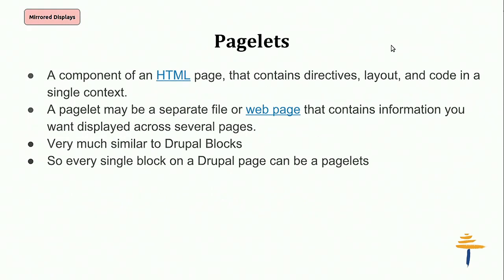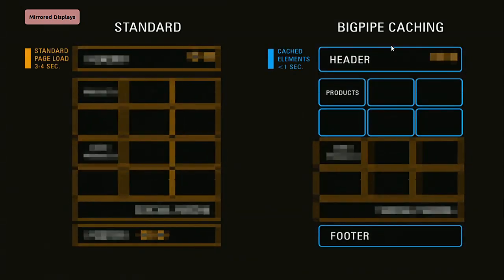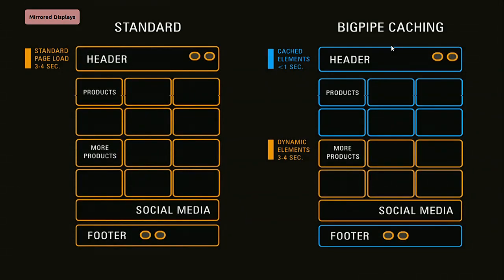What is a pagelet? A pagelet is a component of an HTML page that contains layout, directives, code, HTML — everything of the page. What BigPipe does is divide the page into different pagelets. When you render the page in your browser, it first renders your static content and then slowly renders each pagelet.